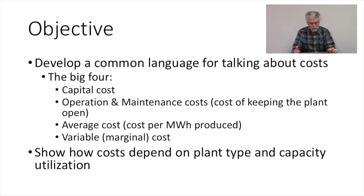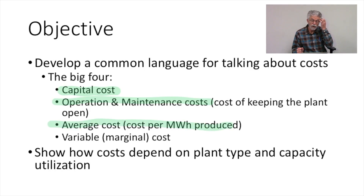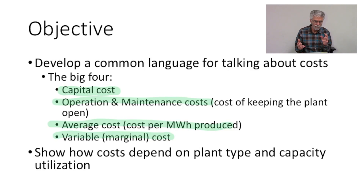In order to develop a common language of cost, we're going to start with the big four — the big four parts of cost when we think about power plants, building and operating power plants. So we need to think about capital costs. We need to think about operation and maintenance costs. We want to be able to describe the average costs of operating a power plant. And then we want to think about our variable costs and what it means to cost as we increase the amount of output from a power plant. We're going to show how costs depend on the plant type and on the capacity utilization of the plant.